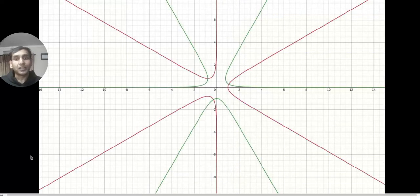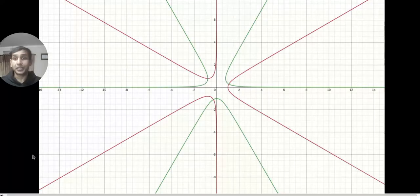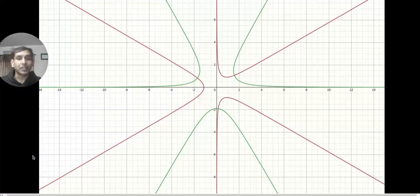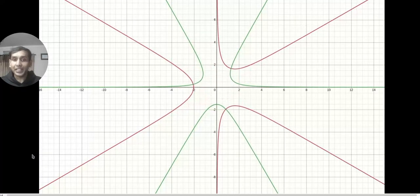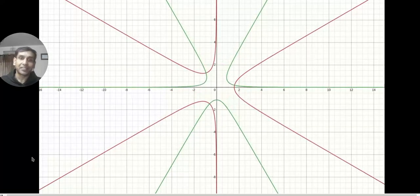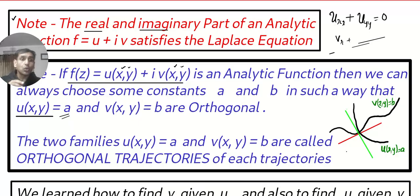And now the last one, f of z equal to z to the power 3. Red is the real part, green is the imaginary part. So according to the theory, the red will always find a perpendicular partner, the green one. So I hope you are able to understand. Can you see? The red tangent is perpendicular to the green tangent. If curves are perpendicular, then the tangents at that point will be perpendicular.